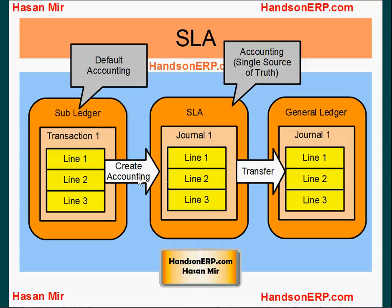When you run the create accounting program, accounting gets created in the subledger accounting module based on what you have in the subledger. So the subledger holds default accounting, and subledger accounting holds the actual real accounting — a single source of truth representing what you have in your subledger.